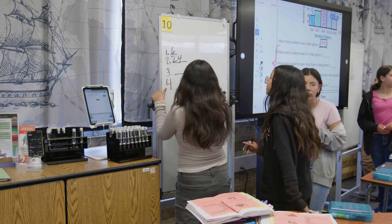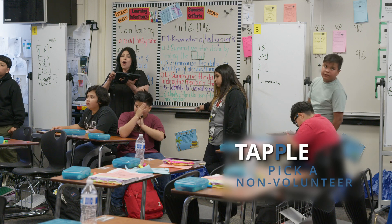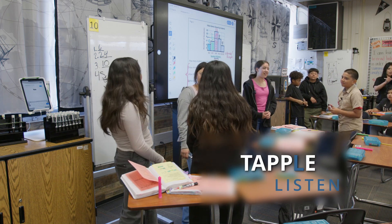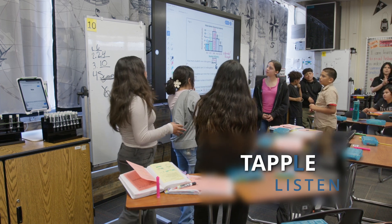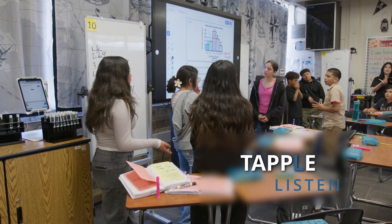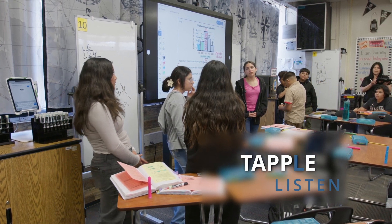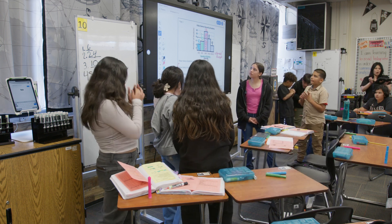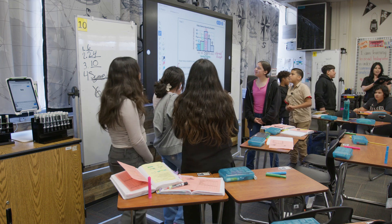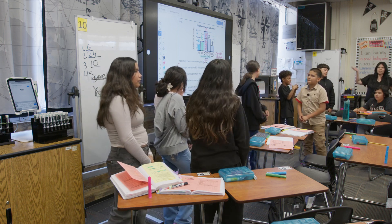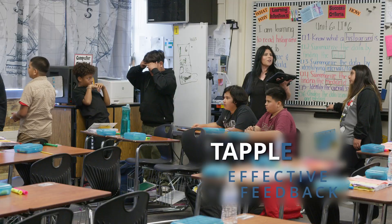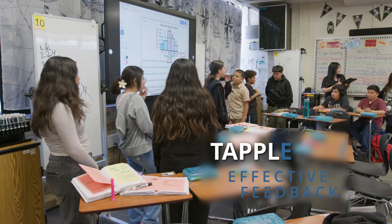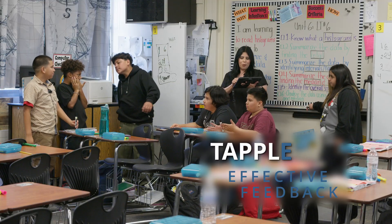Group 10, how many students own more than five video games? It's 24, because you don't count the three-to-five interval since you don't know how many students have three video games. Athena, what did you count to get 24? We counted six to eight, nine to eleven, and nine to twelve and fourteen — those intervals and ranges. So 12 plus 8 plus 4 equals 24. You guys did amazing — let's give them a clap!